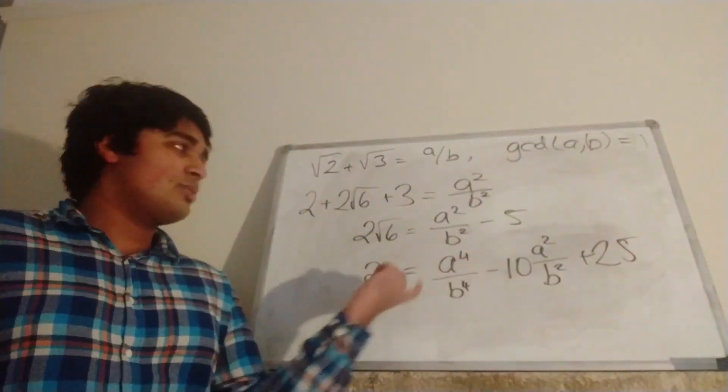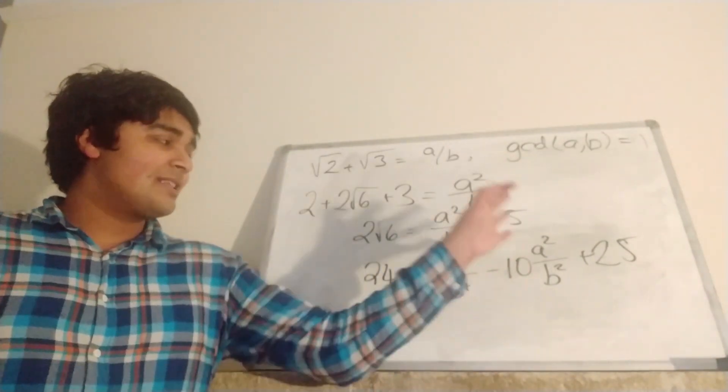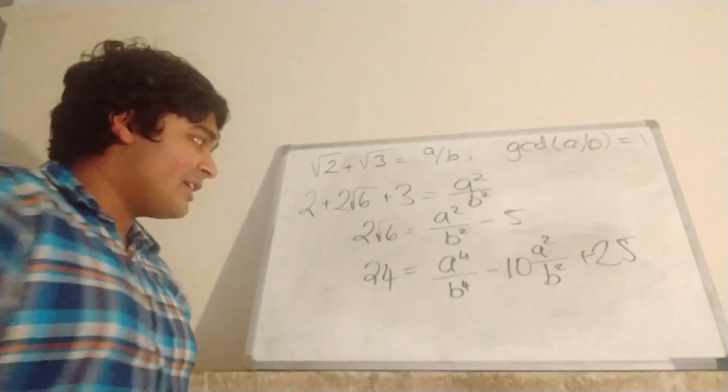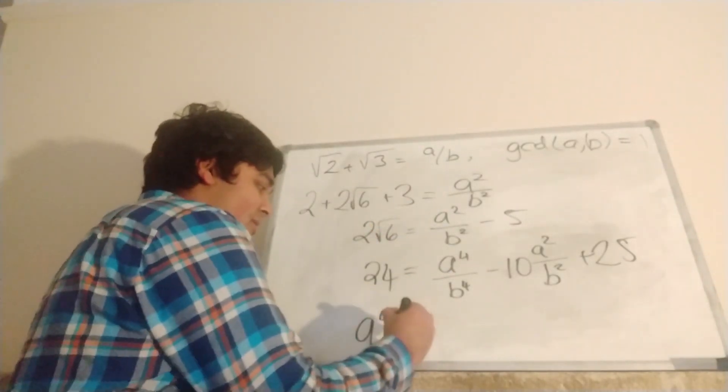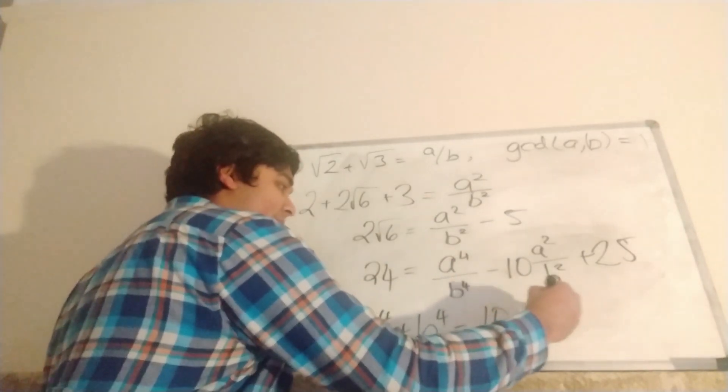We can subtract 24 from both sides. So we get A⁴/B⁴ - 10A²/B² + 1 = 0. Then multiply through by B⁴, and then rearranging we get A⁴ + B⁴ = 10A²B².